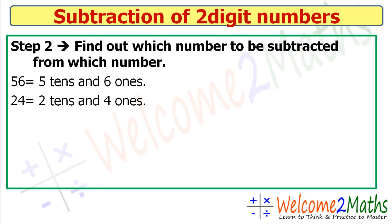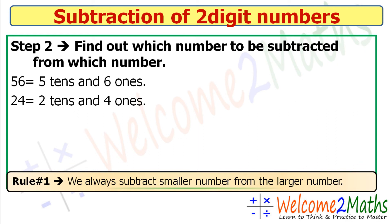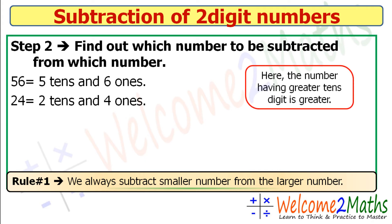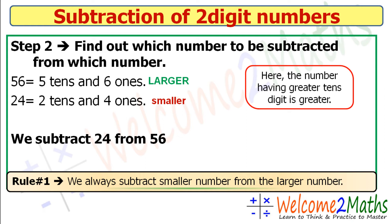Step number two: find out which number is to be subtracted from which number. Rule number one of subtraction: we always subtract the smaller number from the larger number. In two-digit numbers, the number with the greater tens digit is greater. 56 has five tens so it is larger; 24 has two tens so it is smaller. We subtract 24 from 56, written as 56 minus 24.